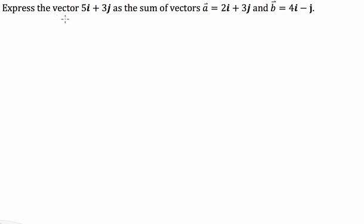Basically what we've been asked is to express the vector 5i plus 3j as the sum of vectors a and b. So we have to find what amount of a plus what amount of b do we have to have to get this end result vector here.